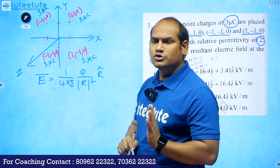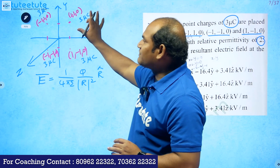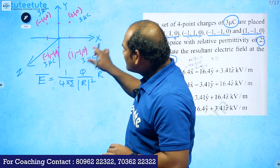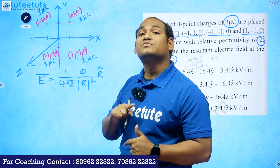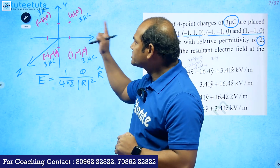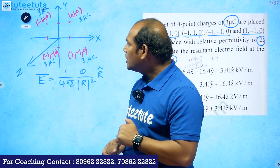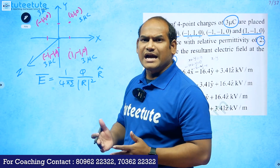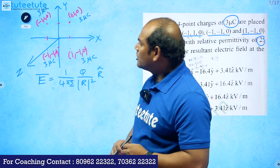We don't have a single point charge — we have four point charges. Since Coulomb's law follows the linearity property (superposition principle), we calculate the electric field due to each of the four charges individually and then add all four electric fields to get the total field at (1,1,1).